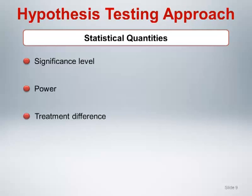The relevant desired treatment difference expected to be observed between the treatment arms should reflect the smallest clinically meaningful difference between the groups that can reasonably be expected based on the potency of the intervention under study. This value should be selected based on clinical expertise and previous research in the field.